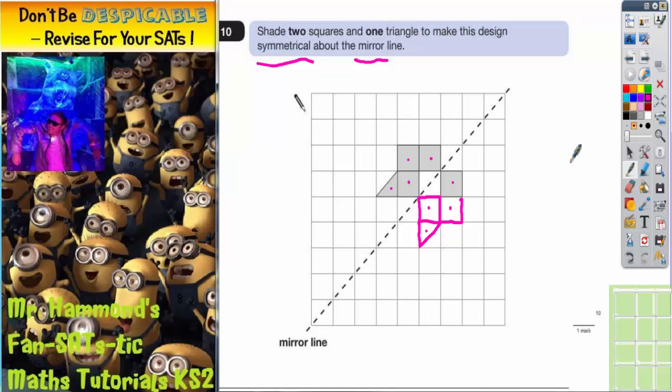Another way of doing it would be to get some tracing paper. So if you get some tracing paper and trace the shape, as long as you trace the shape and trace the mirror line, then what you've got to do is flip the tracing paper over it, not rotate it. It's got to be a flip over. It can't be a rotate.